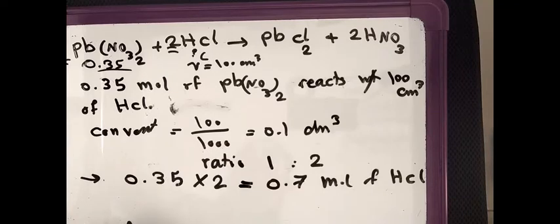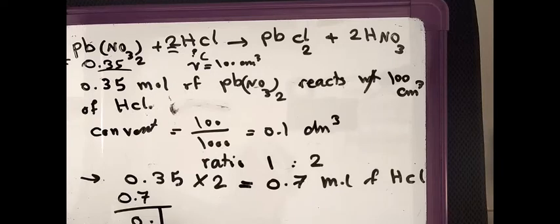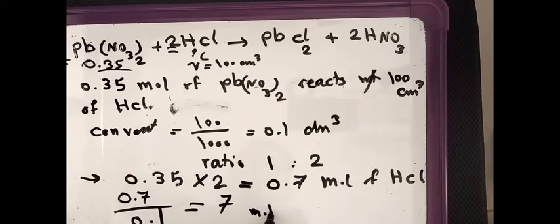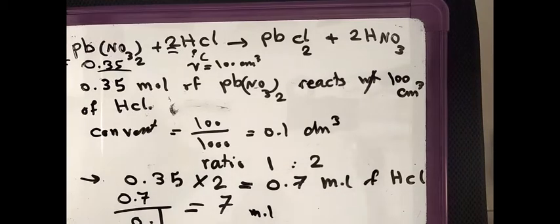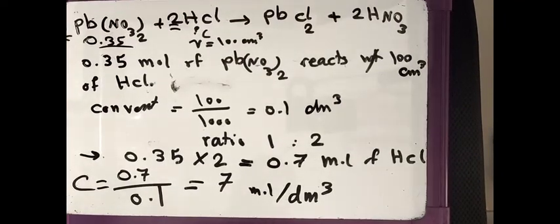In step 3, we have 0.7 moles of HCl divided by 0.1 dm³ (its volume), which equals 7 mol/dm³. So the concentration of HCl (hydrochloric acid) is 7 mol/dm³.